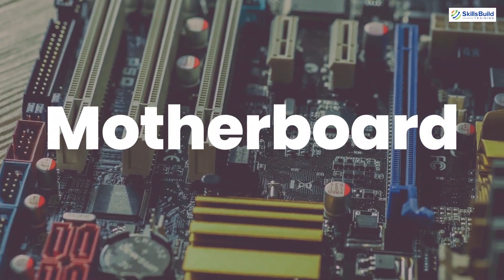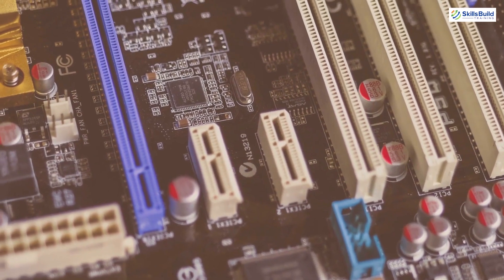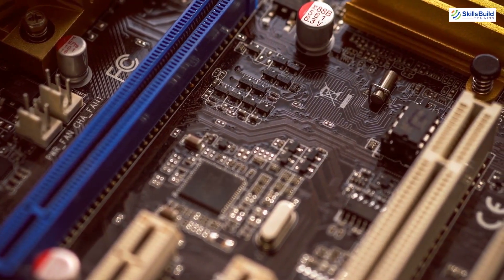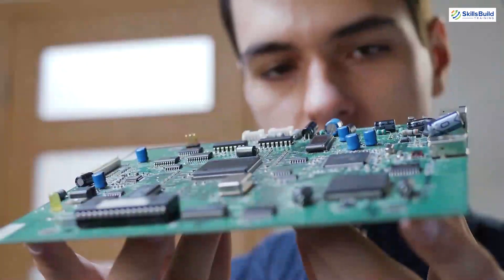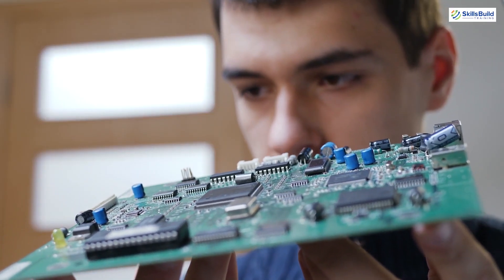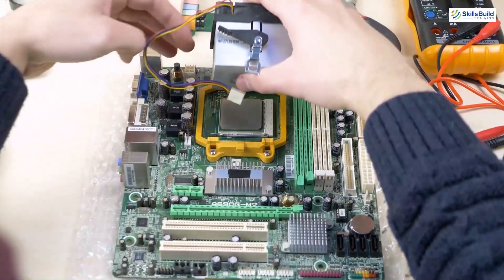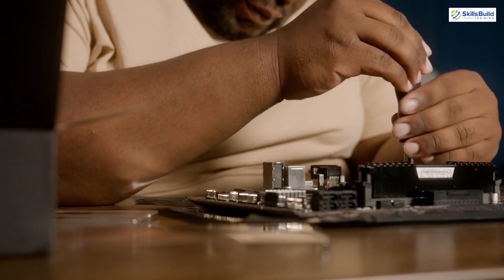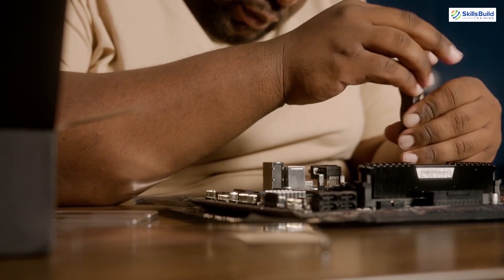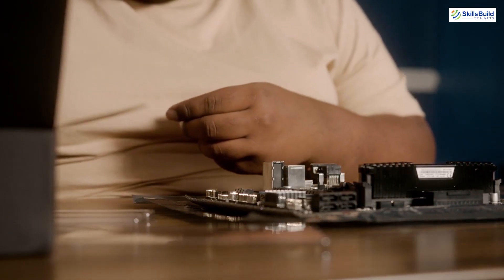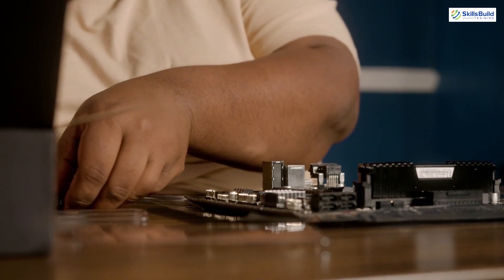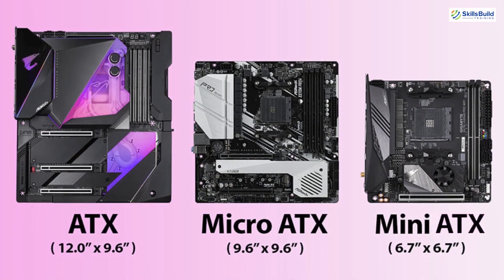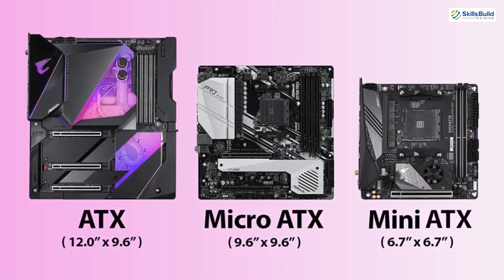Now let's talk about the motherboard. A motherboard is a printed circuit board and is like the backbone of a computer — it ties all the components together in one place and ensures communication takes place between all components. There are different factors to consider when choosing a motherboard. The first one is form factor, which is the motherboard size consideration. It is imperative to consider the size of the PC we are building, how many components we want to configure now, and how much flexibility we want for future upgrades. We generally have three sizes: Mini ATX, Micro ATX, and ATX.